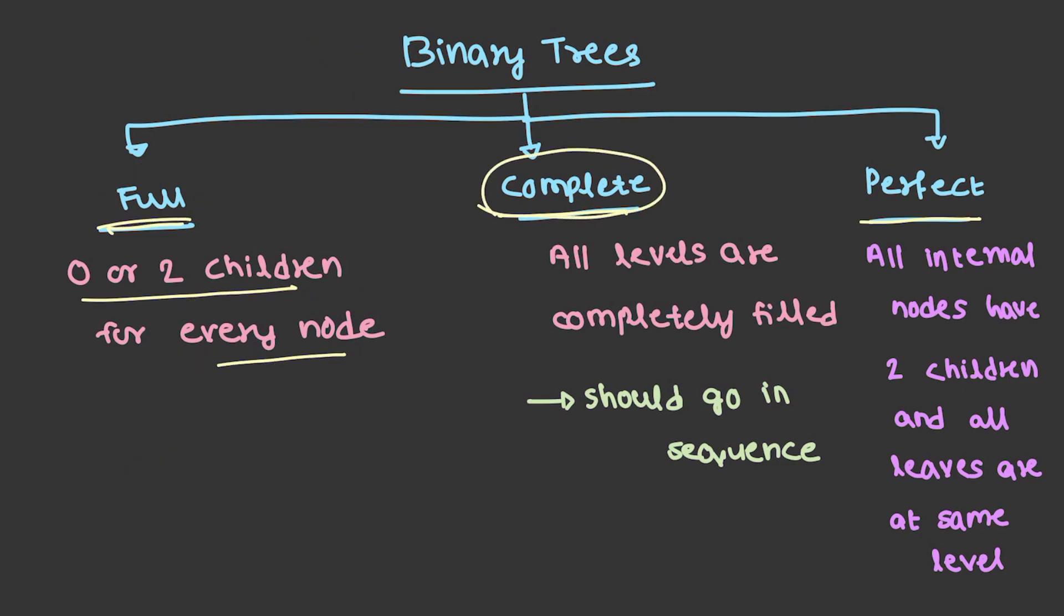Now, we are having complete binary trees. In the case of complete binary tree, I will suggest you to go with the definition. We should go in sequence. You take a node, you have to fill the nodes in sequence. If you take this tree, all the nodes are filled in sequence. We have started with the root, fill the left, fill the right and then fill the left of this. This can be a complete binary tree. If you start with the root and if you fill right without any left, it cannot come under the category of complete. So, it should be in sequence.